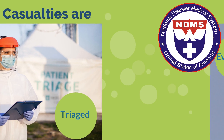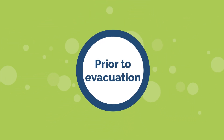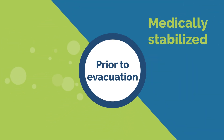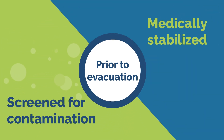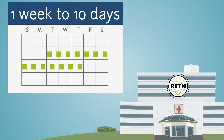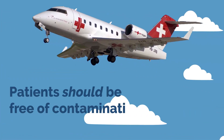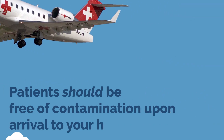As part of the National Disaster Medical System process, casualties are triaged and evacuated to hospitals outside of the region for medical care. Prior to evacuation, patients need to be medically stabilized and screened for radioactive contamination. It may be a week to 10 days before patients are evacuated to a RITN facility.